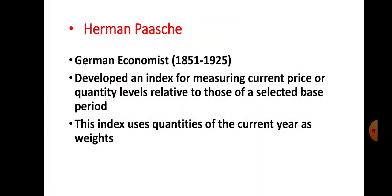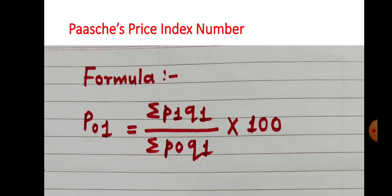Now let us see how to construct Paasche's price index number. Before constructing Paasche's index number, we have to know some important things about Hermann Paasche. He was a German economist and his period was from 1851 up to 1925. He developed an index for measuring current price or quantity levels relative to those of a selected base period. This index uses quantities of the current year as weights. The formula is P01 is equal to Sigma P1Q1 divided by Sigma P0Q1 into 100.